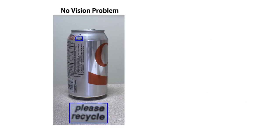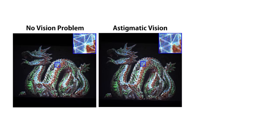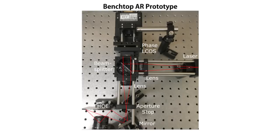Our display is also capable of correcting defects in the user's vision. Here we place an additional lens in front of the camera to introduce astigmatic vision. Here we show a photograph of our display with normal vision and with astigmatic vision. We then correct the astigmatic vision in the hologram, producing an image that looks virtually the same as the image taken with normal vision.